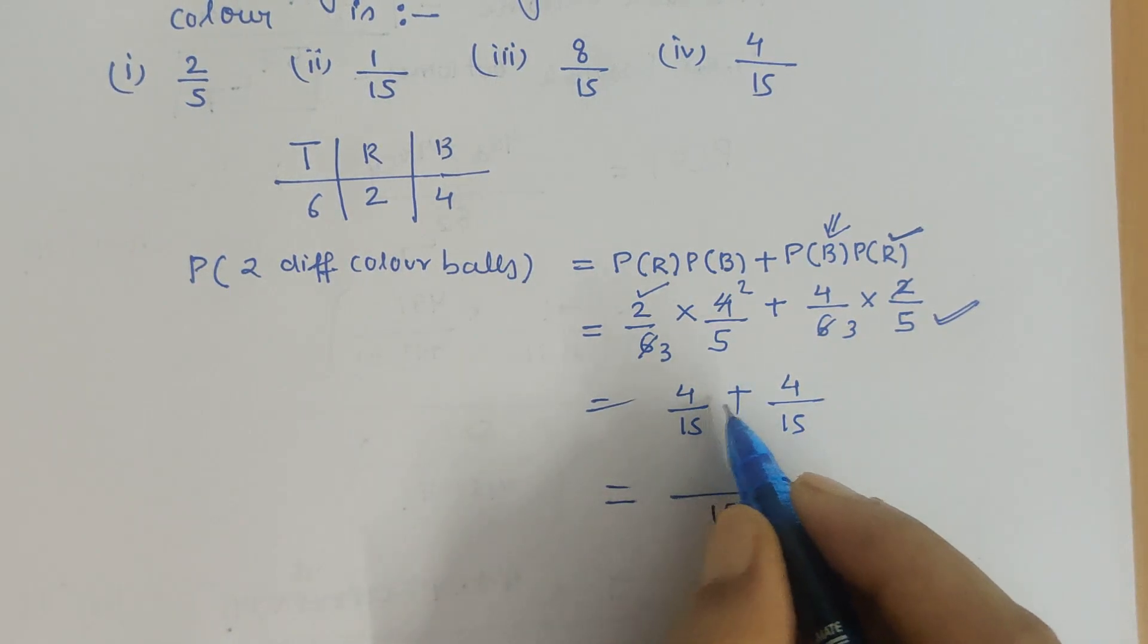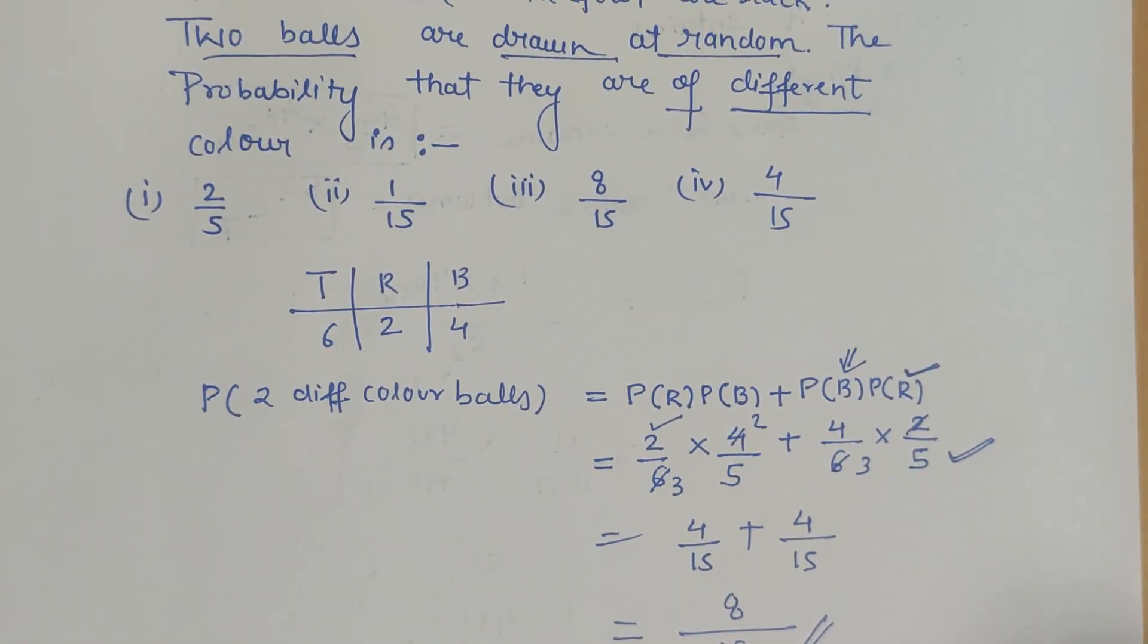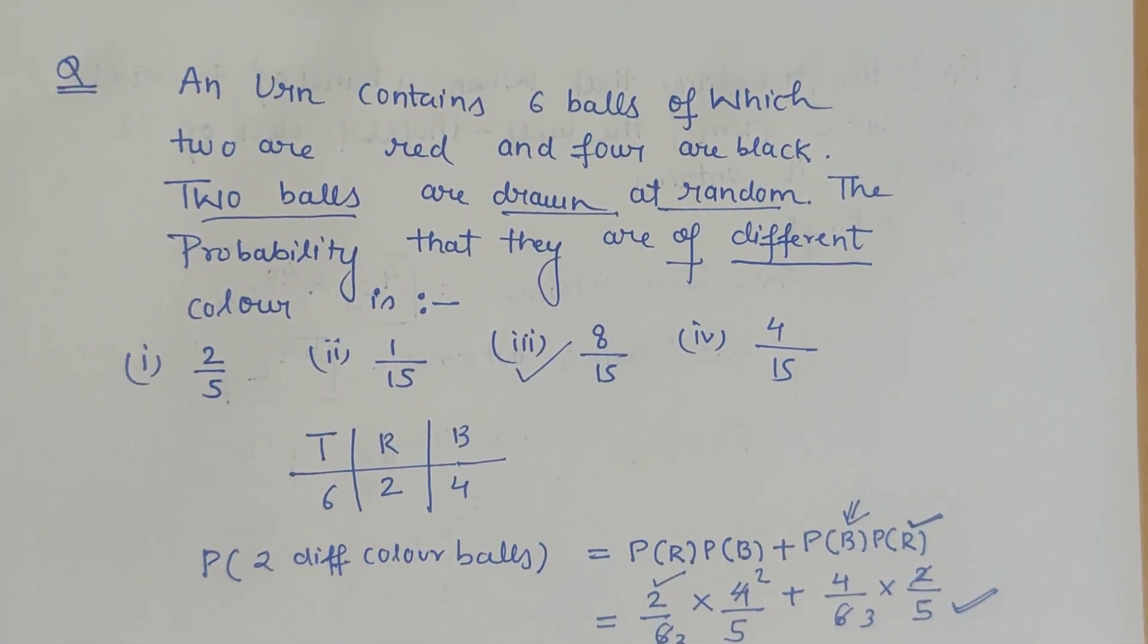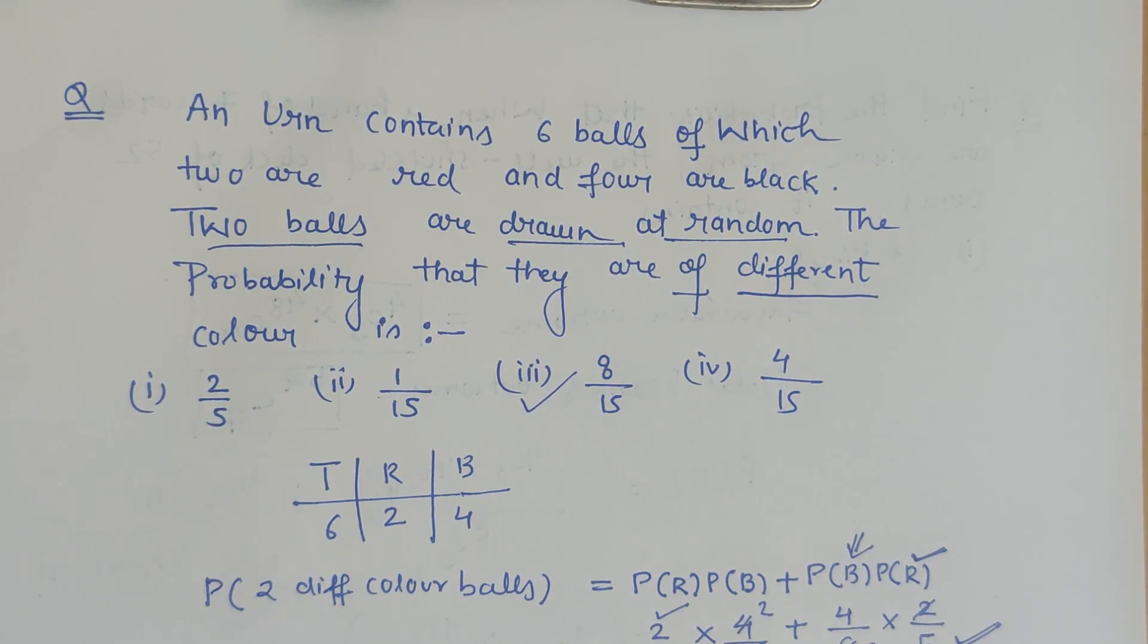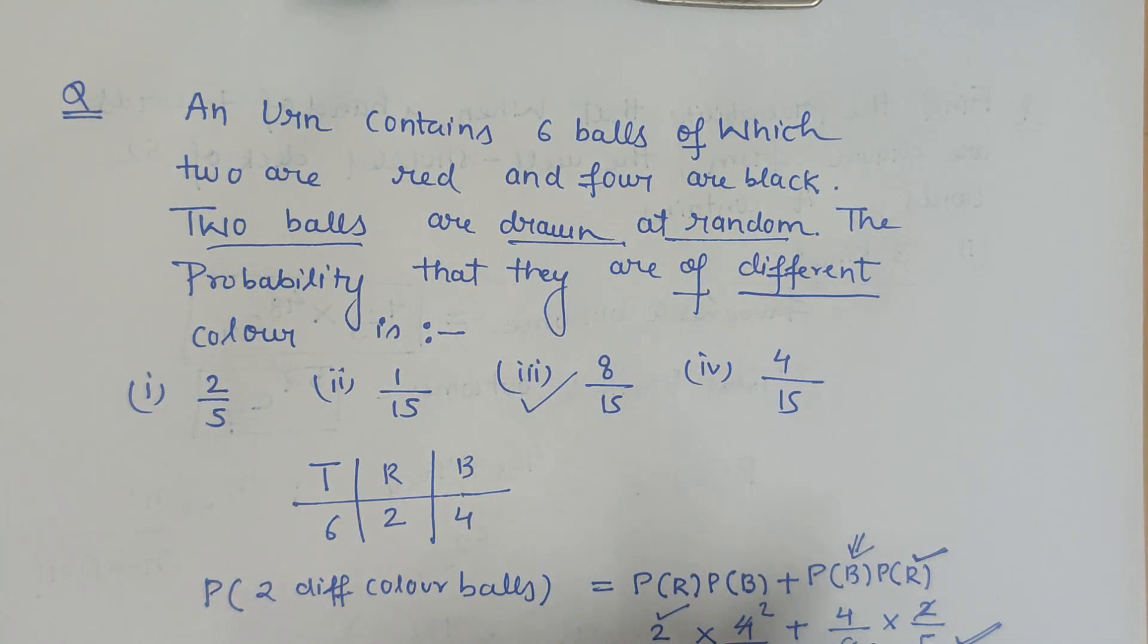So the required solution for the given problem is 8/15. The probability of drawing two balls and the balls are of different color is 8/15. If you have a problem with any other question, you can please write it in the comment box. Thank you.